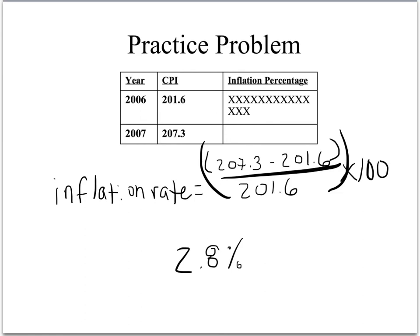What I like to tell students is to just go line by line. Type 207.3 minus 201.6 and hit enter. Then take whatever that answer is, divide by 201.6 and hit enter. Finally, multiply by 100 and hit enter, and you should come up with 2.8%.